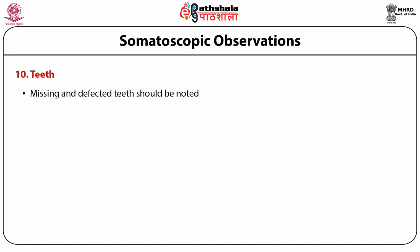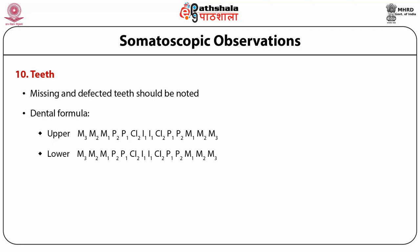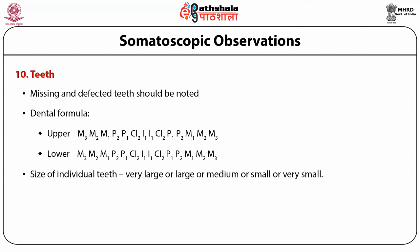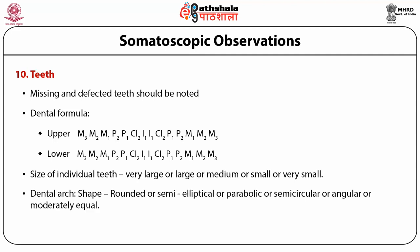Teeth: missing and defective teeth should be noted. The dental formula includes upper and lower teeth: m3, m2, m1 (molars), p2, p1 (premolars), c (canines), i1, i2 (incisors) on both sides. Size of individual teeth may be very large, large, medium, small, or very small. Dental arch shape may be rounded, semi-elliptical, parabolic, semi-circular, angular, or modally equal; symmetry may be asymmetrical or symmetrical.